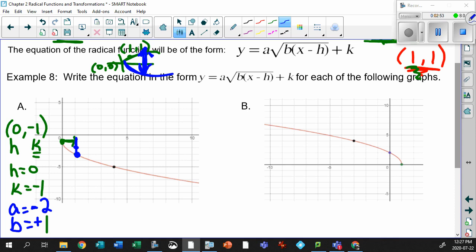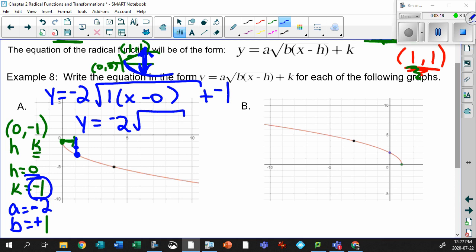Interesting. So let's put this together and give me a formula. y equals, your a value is flipped and stretched, negative 2. Your b value is 1. x minus h. h was 0. Plus your k value, which was negative 1. So let's clean this up. y equals minus 2 times the square root of x minus 1.